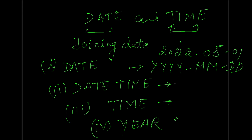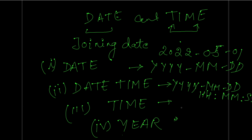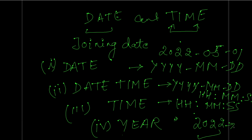If you want to store both date and time, you use DATETIME, providing the date in YYYY-MM-DD format and time in HH:MM:SS (hours, minutes, seconds). If you want to store only time, use TIME with the same HH:MM:SS format. If you want to store only the year, use the YEAR data type — it stores four digits by default, for example 2022.